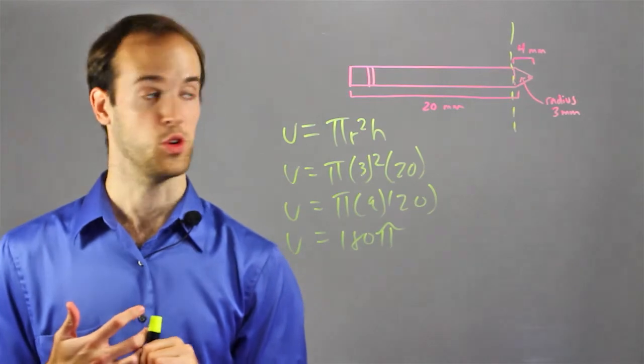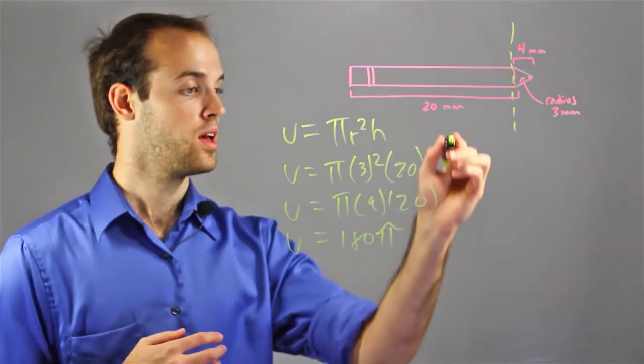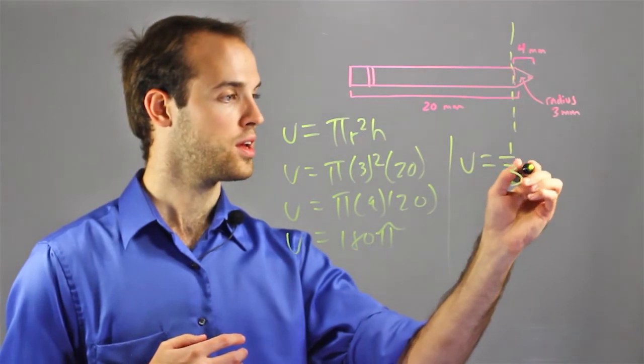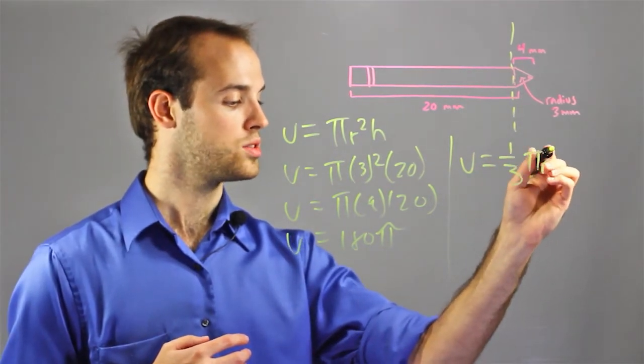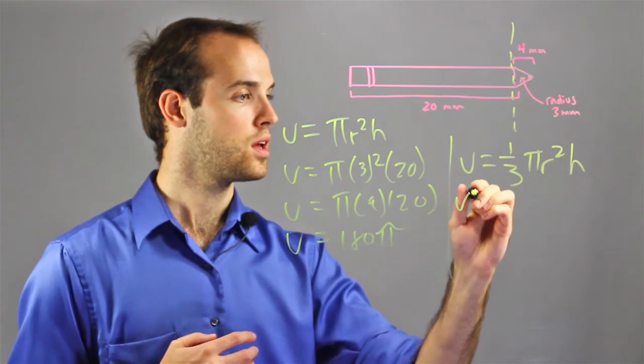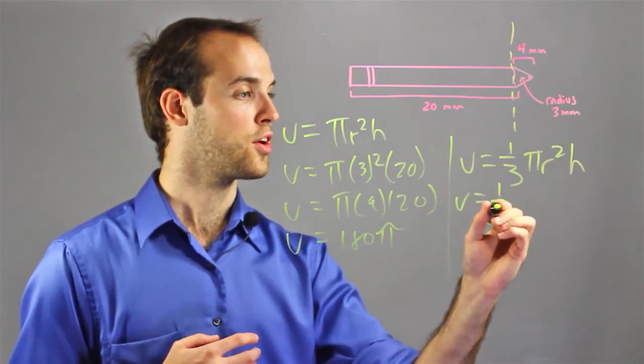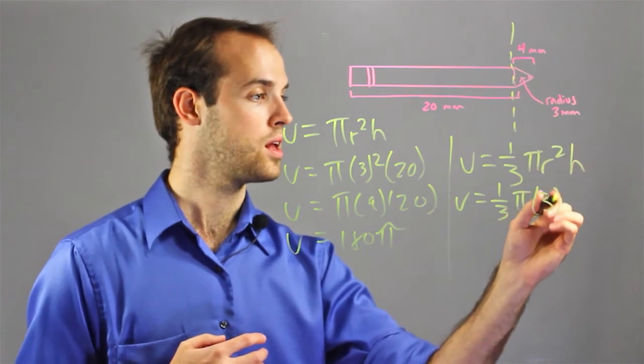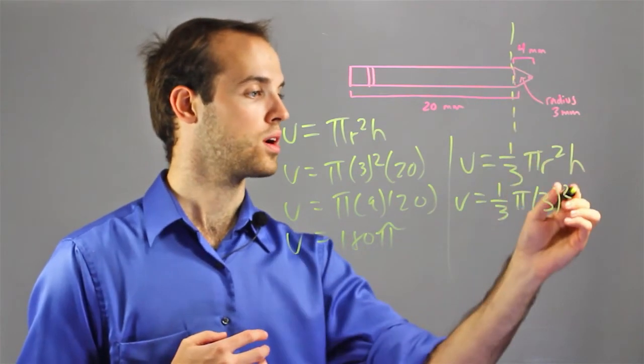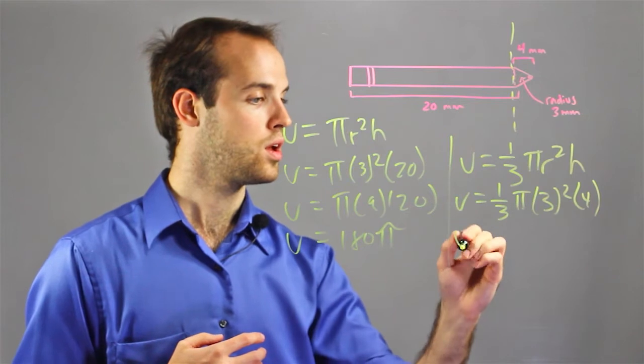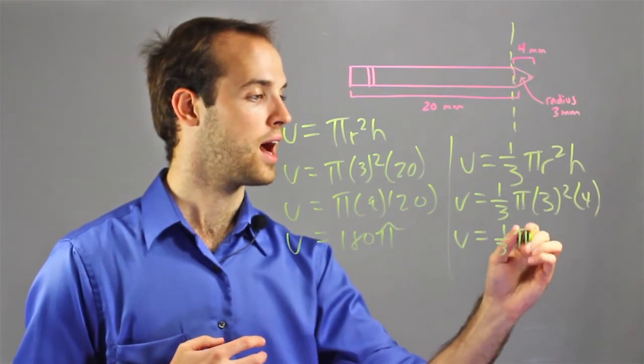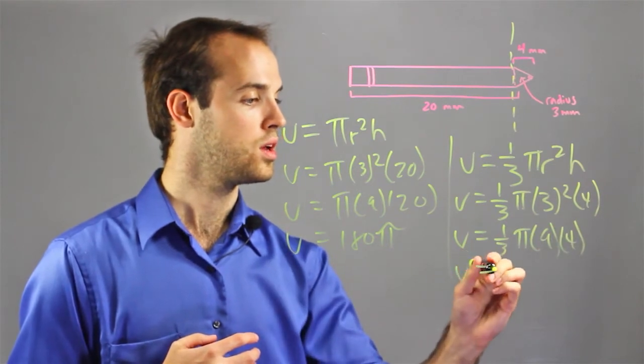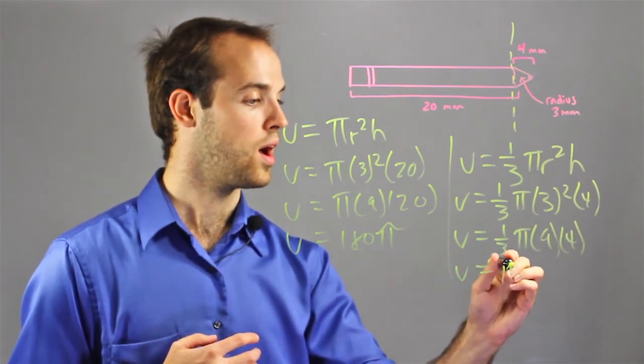So, now I'm going to move on to the cone at the top. And I know that the volume of a cone is equal to 1/3πr²h, which is 1/3π(3)²(4). Which means I have 1/3π × 9 × 4, which means that I have 12π.